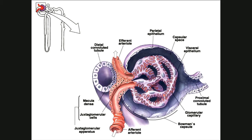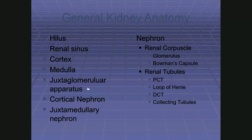The renal corpuscle is the beginning of the nephron — the head of the snake. The juxtaglomerular apparatus (JGA) is located right here at the renal corpuscle. The JGA is the endocrine component of the kidney — this is where hormones are made, especially erythropoietin and renin.